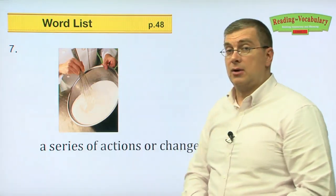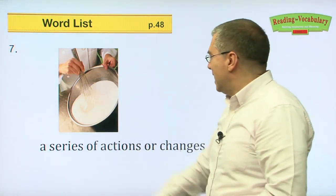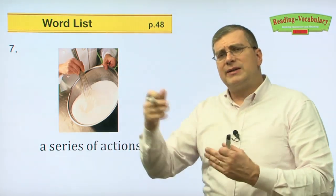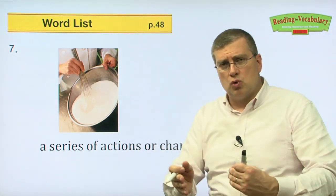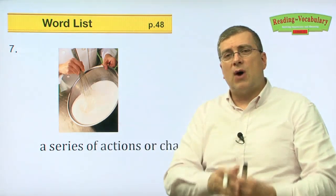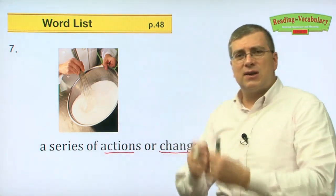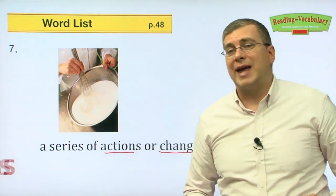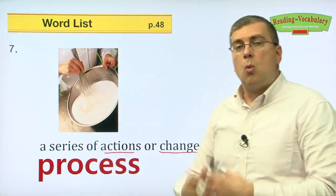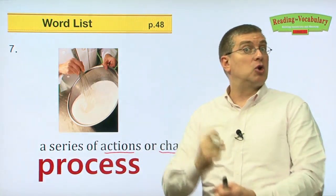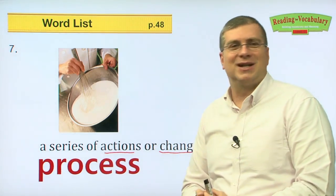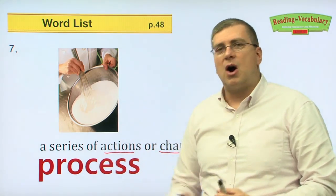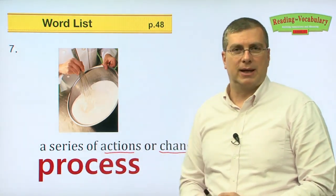Number seven. A series of actions or changes. When you cook something, you're doing a series of actions: step one, step two, step three. You follow many actions or changes — different steps. We call all of those steps together a process. What is the process of making chocolate chip cookies? What is the process of making a pancake? You follow the different steps. Those steps are a process — how to do something.